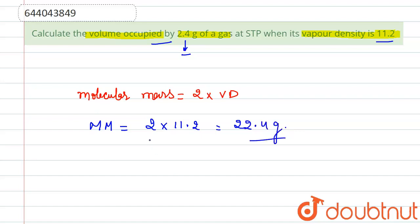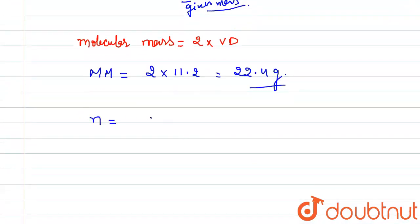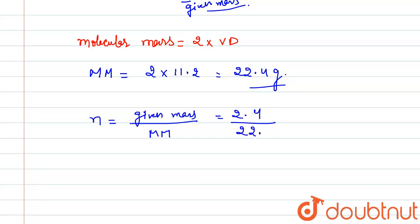So this is the molecular mass we have. The given mass is 2.4 grams. To obtain the number of moles, we know that number of moles equals given mass divided by molar mass. Putting in the values: 2.4 divided by 22.4, which equals 24 divided by 224.